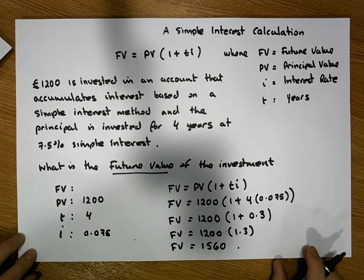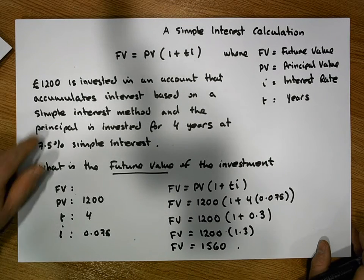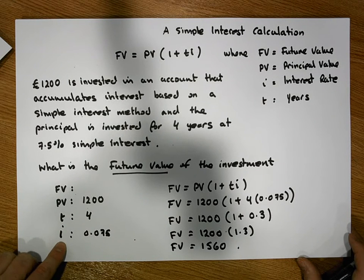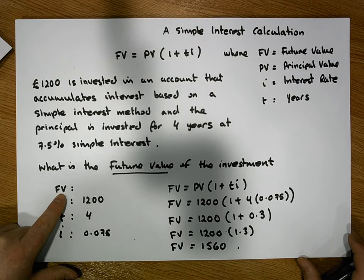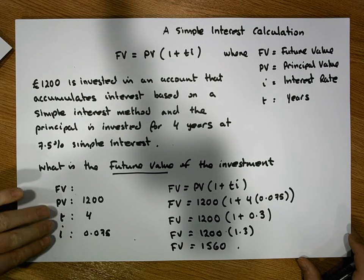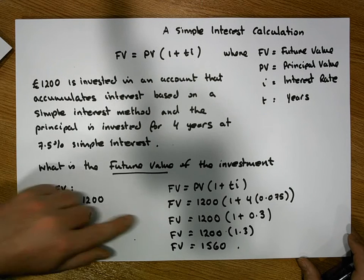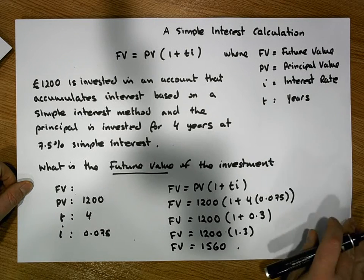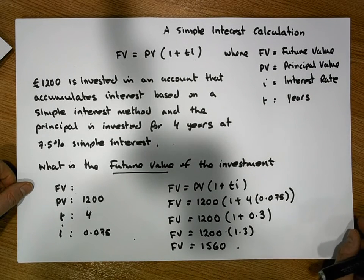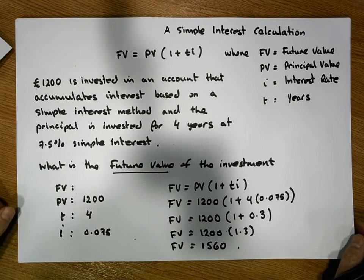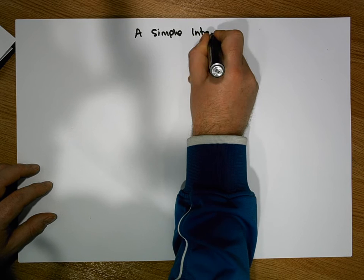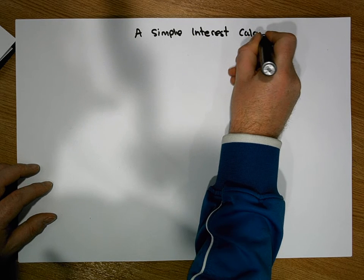So that's one way we can calculate simple interest — by knowing the present value or principal value, how many years the investment is made for, and what the interest rate is. The only unknown in our formula was FV, the future value. Another calculation we could do is to find what the interest rate was to accumulate a particular future value. Let's have a look at that calculation.